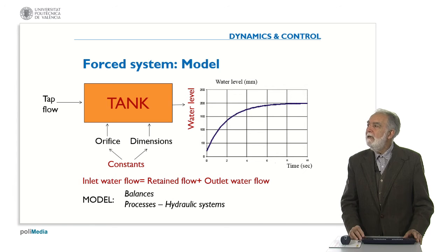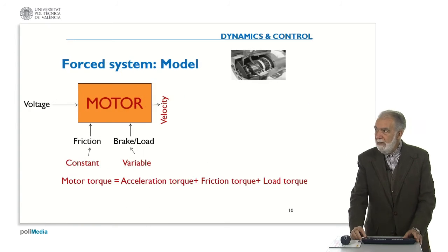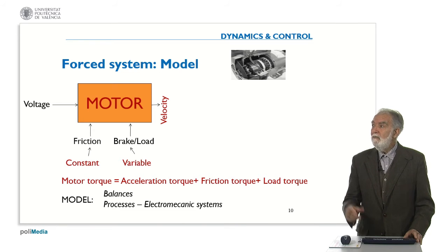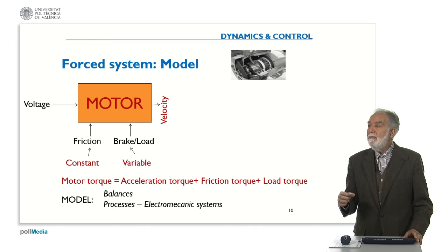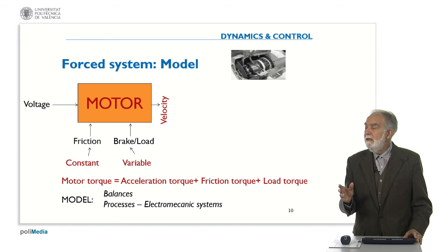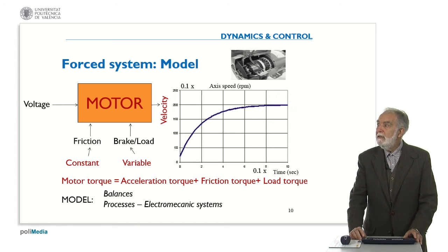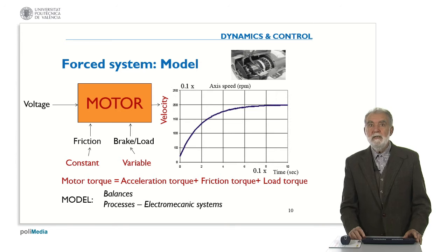The units are different: in the case of the oven it was a centigrade temperature, and here it is water level in millimeters. We have also seen the DC motor — in that case we apply a voltage and there is friction, a brake, and as a result we get a velocity. Some external variables are constant like the friction, and some others are variable. In this case, what we balance is the torque: the torque we are generating is equal to the torque to counteract the load and friction, and also to accelerate the axis. If we draw the behavior of the speed, we will see a graph which is quite similar to the previous ones.